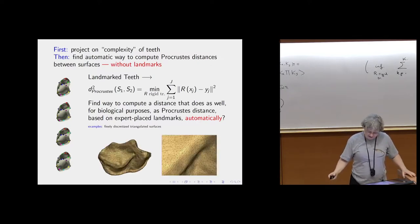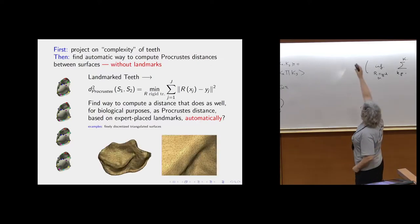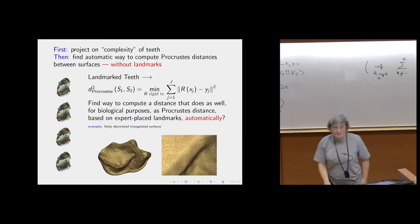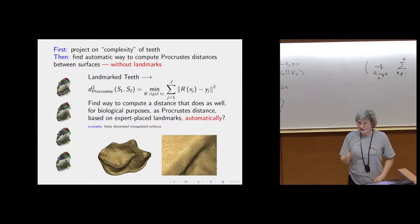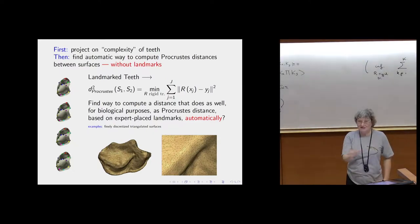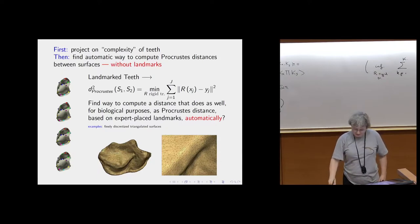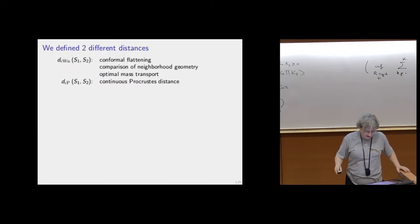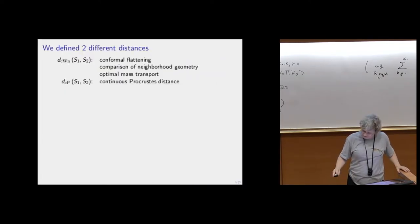We had finely triangulated surfaces. This is a lemur tooth — actually a mouse lemur tooth. It's an animal about this big, so you can imagine its second molar is a tiny little thing, but we look at them enlarged all the time.